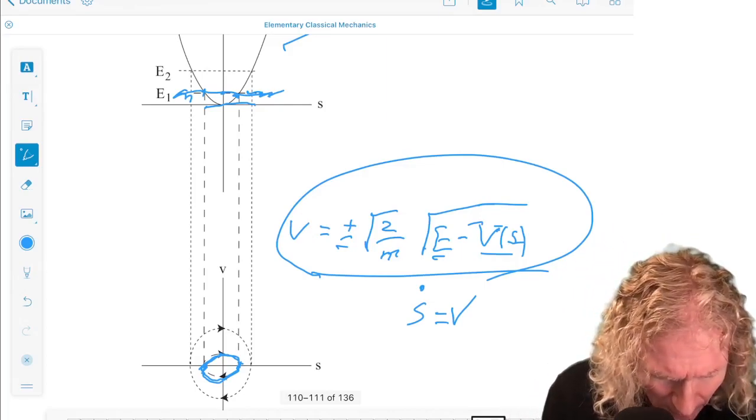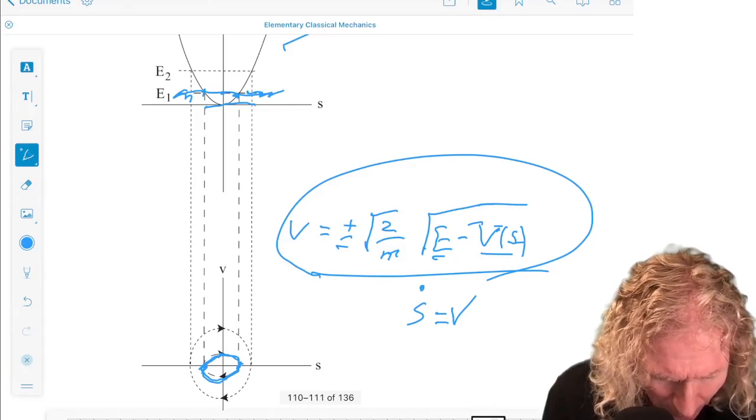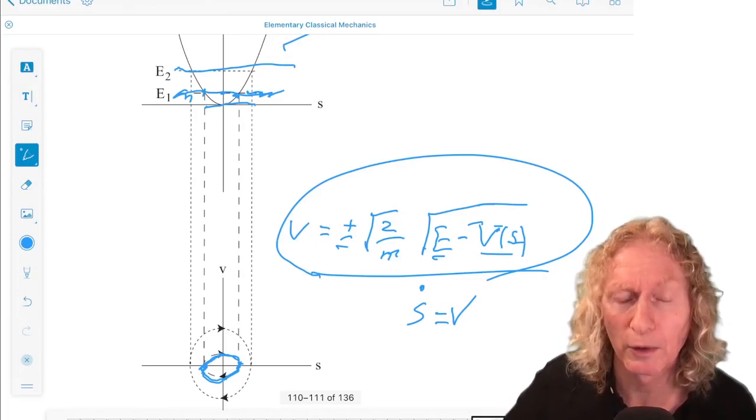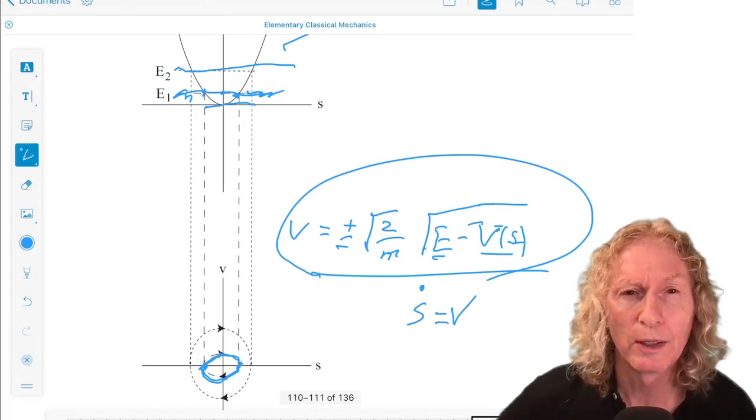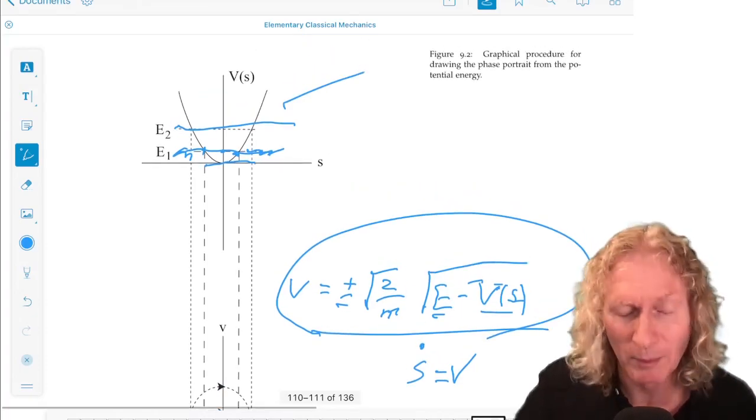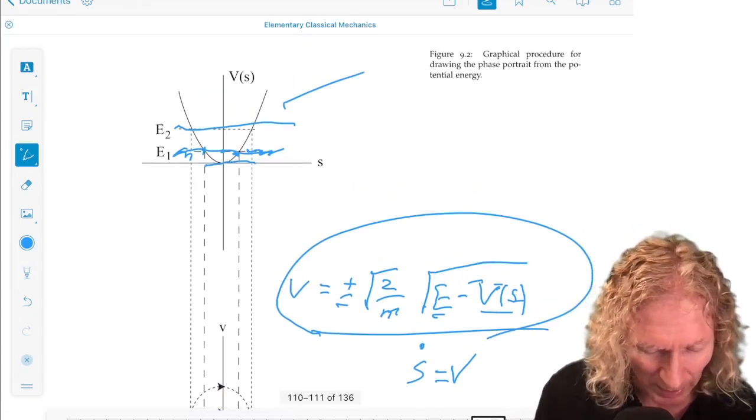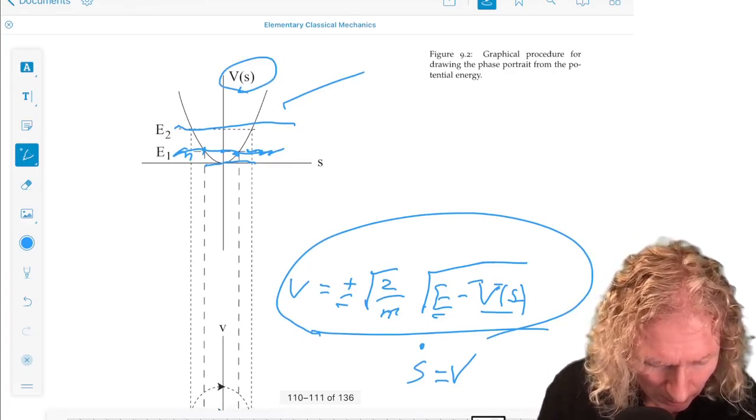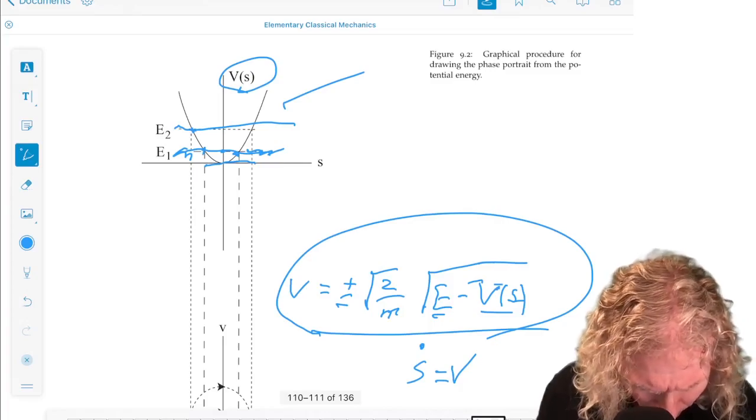So if I draw another energy, so pick a value of E2 larger than E1, and I draw the horizontal line corresponding to potential energy equal that constant value, what I see is something similar.